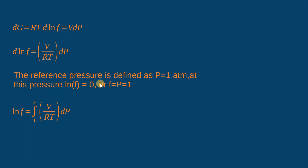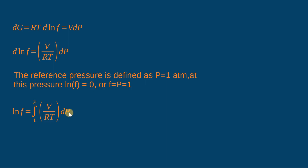At the reference state, f = P = 1. The reference condition for calculation of fugacity is always taken as P = 1 atmosphere in the SI system. Therefore we get ln f = ∫₁ᴾ V/RT dP.